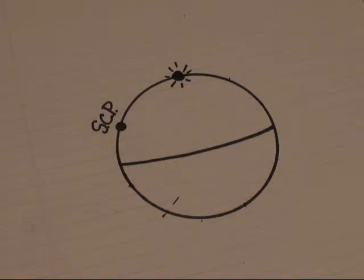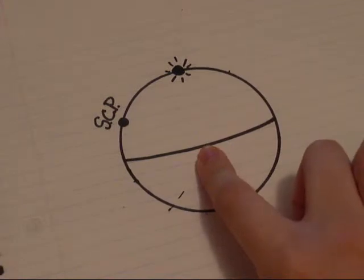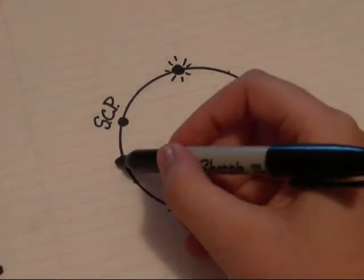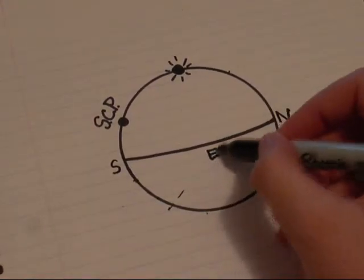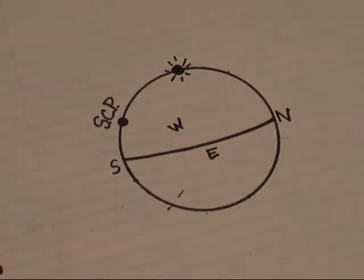Now that we know where the south celestial pole is in relation to our horizon, we can draw in our north, south, east, and west points. So here is south, across from south is north, and then east and west will be somewhere over there.